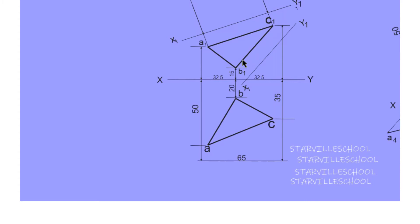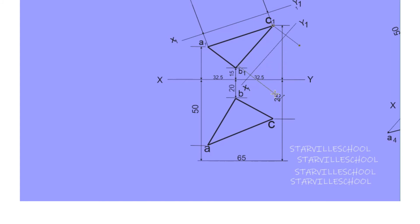After getting that reference line X1Y1, the next thing you have to do is exactly what you did for the first one — draw perpendicular lines passing through C1, and also perpendicular lines passing through B1.